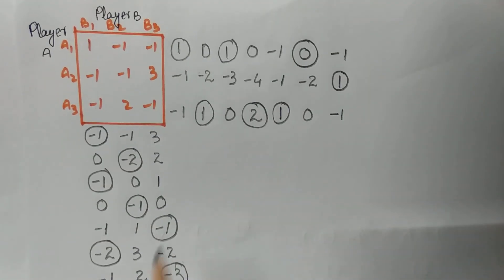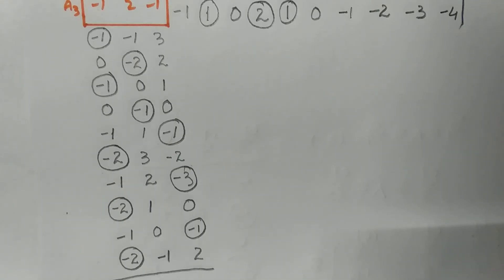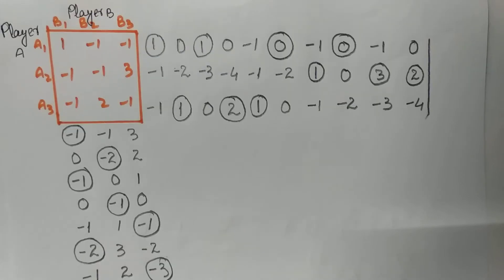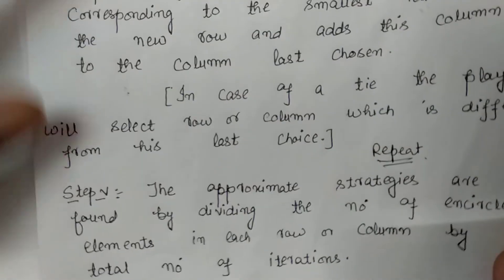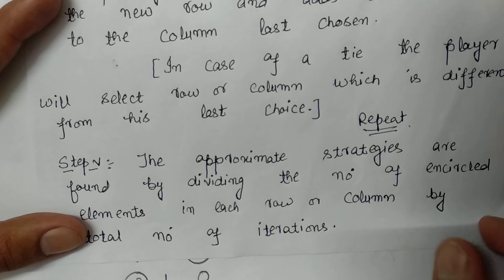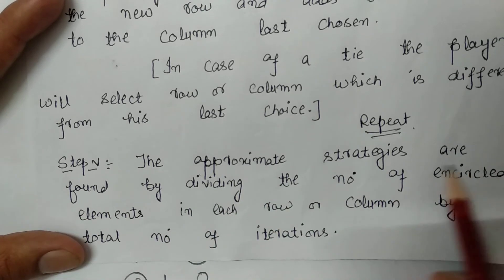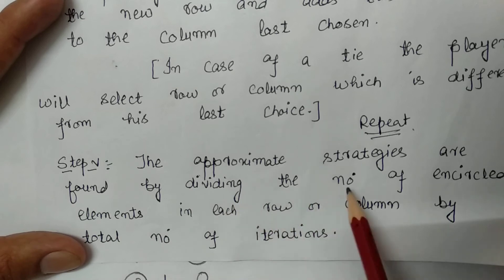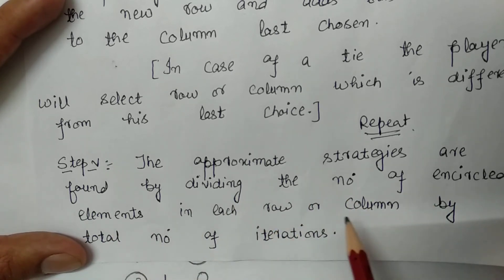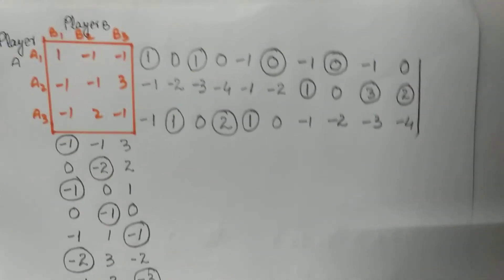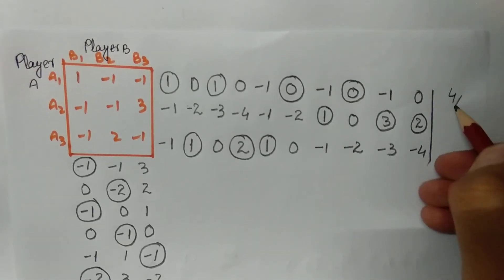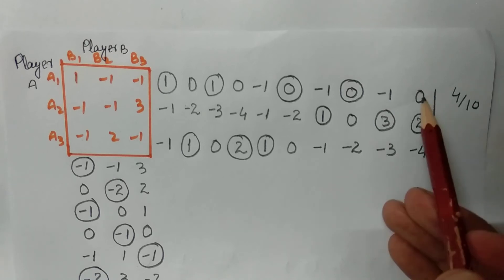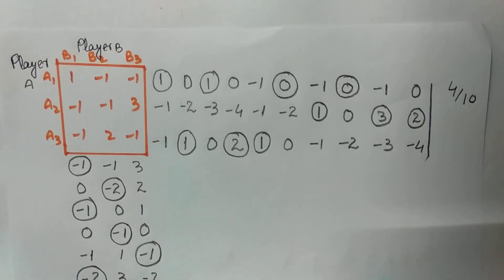I have now written down all ten iterations. After that we find the approximate strategies. Step 5: the approximate strategies are found by dividing the number of encircled elements in each row or column by the total number of iterations. The number of encircled elements in the rows are: one, two, three, four — that is four encircled in row one — divided by ten iterations.